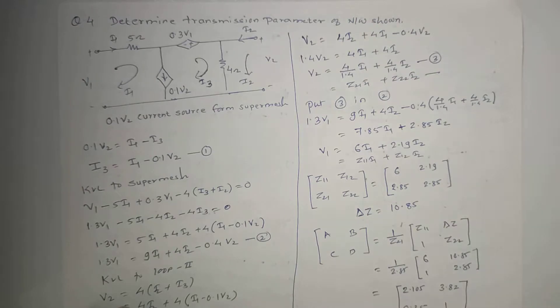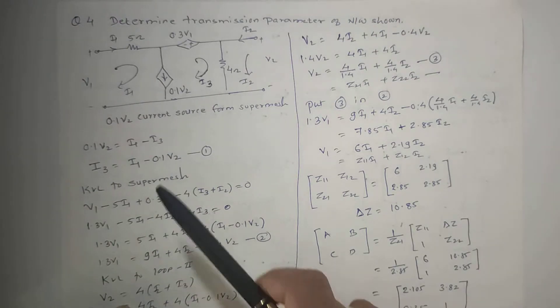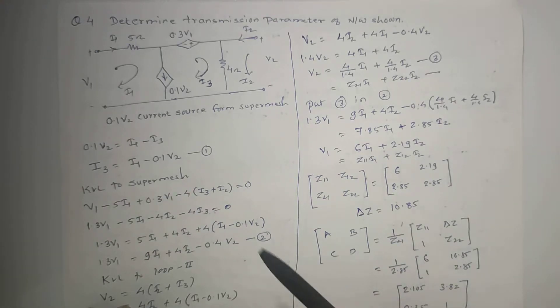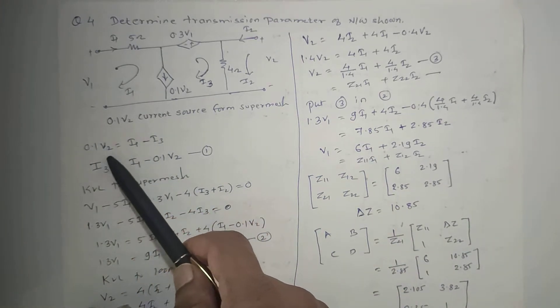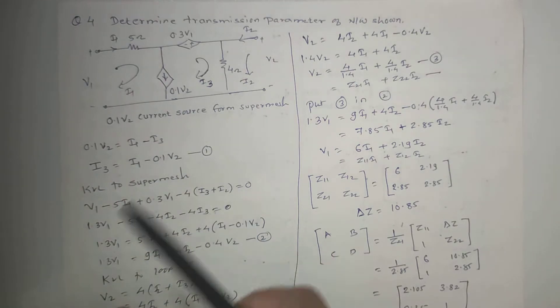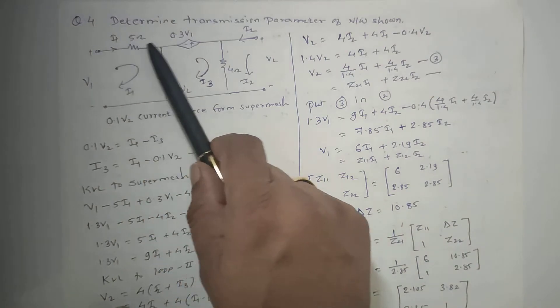Because undesirable variables are replaced and substituted, we get one equation. Then we will apply KVL to super mesh.